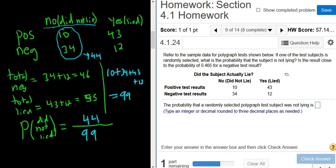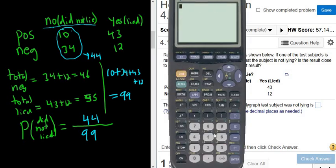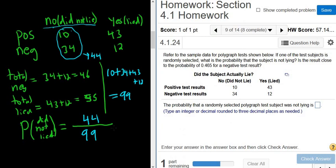So 44 people did not lie. Then you can put this in your calculator. So you would do 44 divided by 99. So 0.444 because it wants three decimals. 0.444.